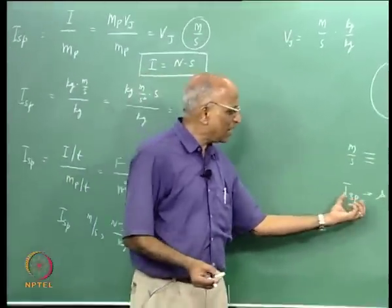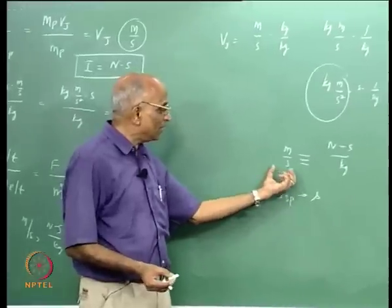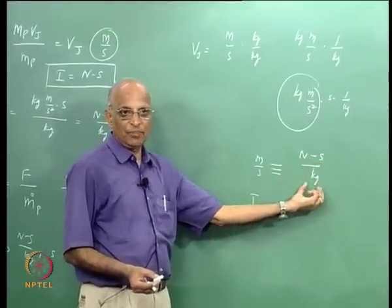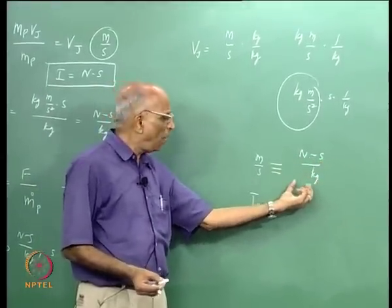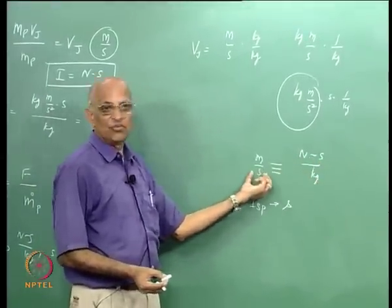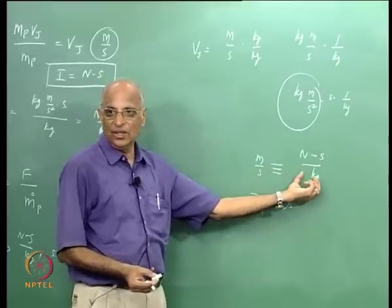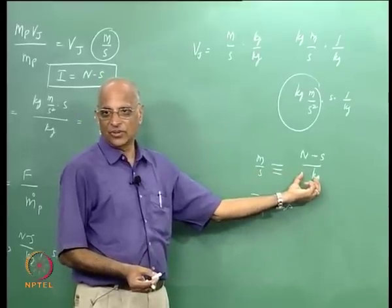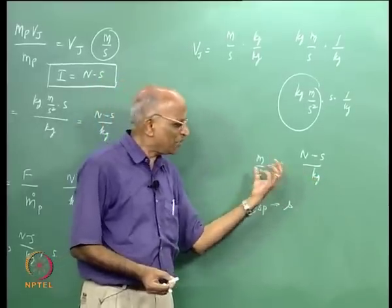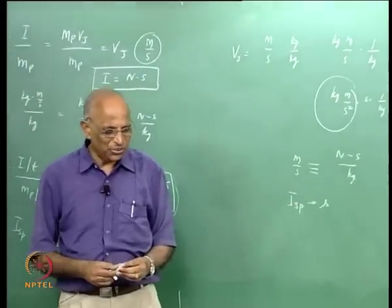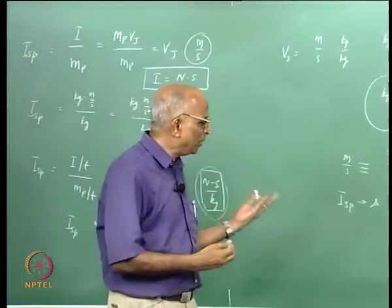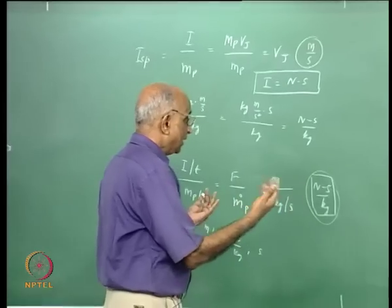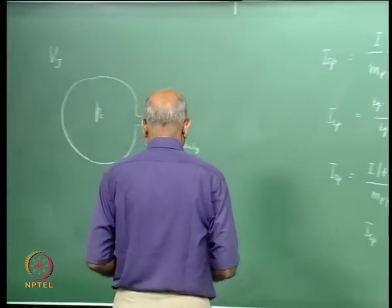Many textbooks still continue to define specific impulse in terms of seconds because they also specify force in kilograms or pounds — pounds and pounds get cancelled, leaving seconds. Therefore, whenever somebody gives specific impulse in seconds, it is my duty to multiply it by the conversion constant g_c and then use it in Newton·second per kilogram. In this class we will always address specific impulse in Newton·second per kilogram or in meters per second, both of which have the same identical units. Units are very important in engineering — without units we could be talking of something but getting some other figure.